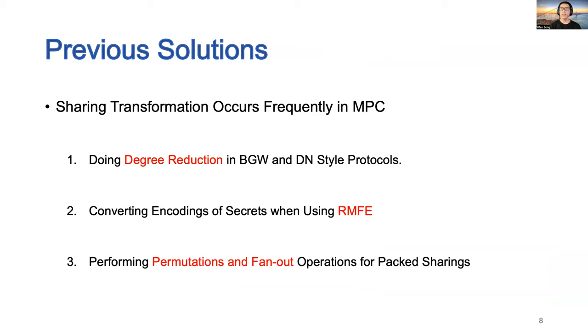Sharing transformation occurs frequently in designing MPC protocols, such as doing degree reduction in BGW and DN-style protocols, converting encodings of secrets when using reverse multiplication-friendly embeddings, and performing permutations and fan-out operations for secrets of packed secret sharing.